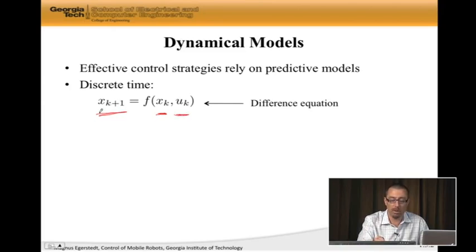So, the position of the robot tomorrow is a function of where the robot is today, and what I did today. And then f somehow tells me how to go from today's state and control input to tomorrow's state. This is known as a difference equation, because it tells you the difference between different values across different time instances. So that's in discrete time.